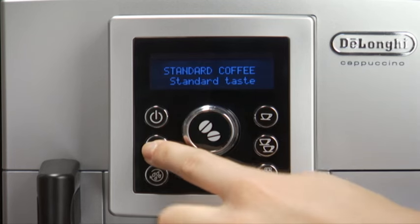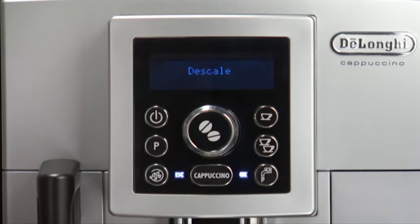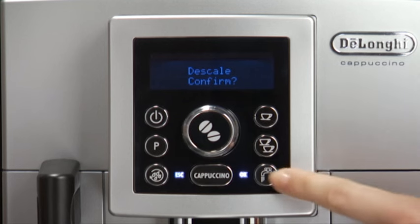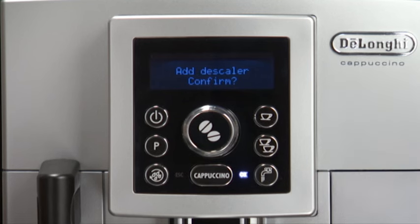Press the P button to enter the menu. Descale is displayed. Select by pressing the Hot Water Delivery button. Descale Confirm is displayed. Press the Hot Water Delivery again to enable the function.